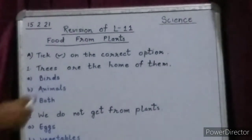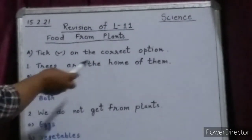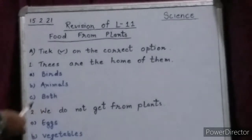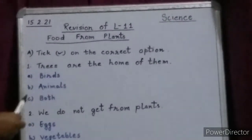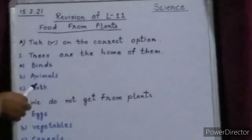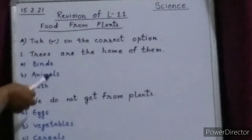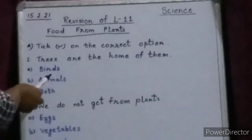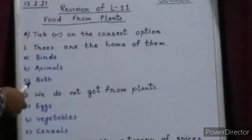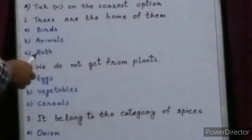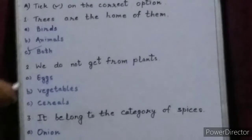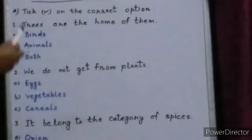First question: Trees are the home of them. Options are A, birds; B, animals; C, both — meaning birds and animals. Many birds live on trees and some animals also live on trees and make their home there. Birds like crow, sparrow, pigeon, and animals like monkey all live on trees. So the correct option is C, both, because birds and animals both live on the tree.